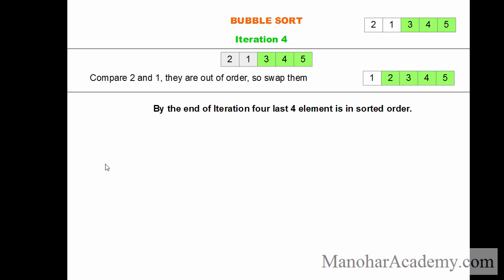We do not need to go for iteration five because there is only one element and that is obviously in sorted order. So this is all about bubble sort. Just as bubbles come from the bottom of a lake to the top, in bubble sort the biggest element is going to come to the end — it gets sorted just like a bubble.